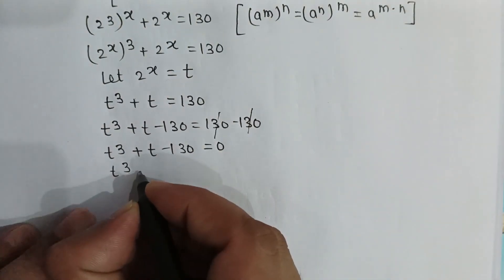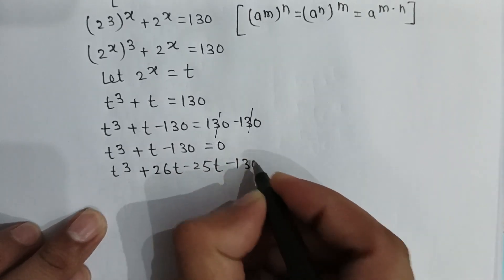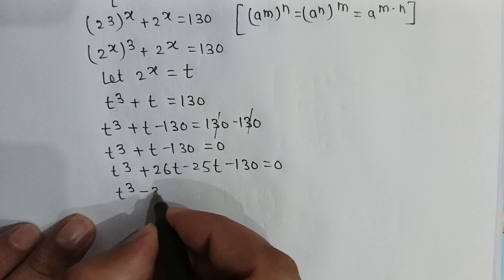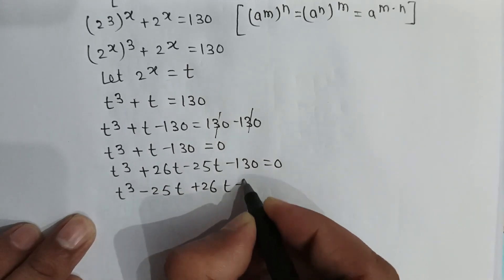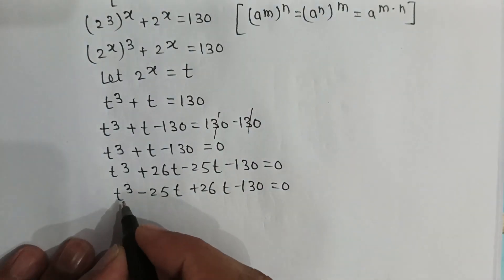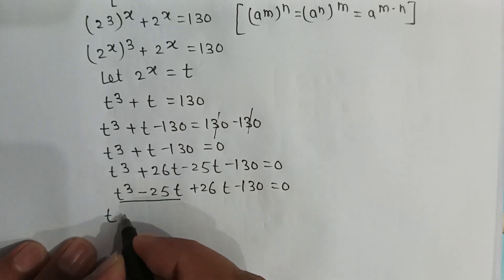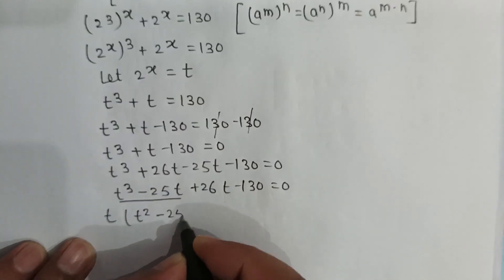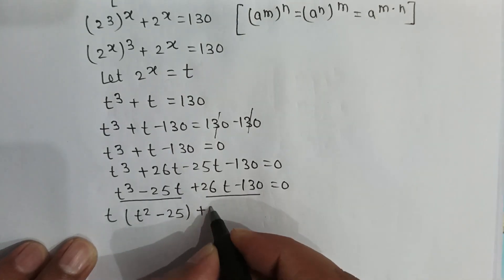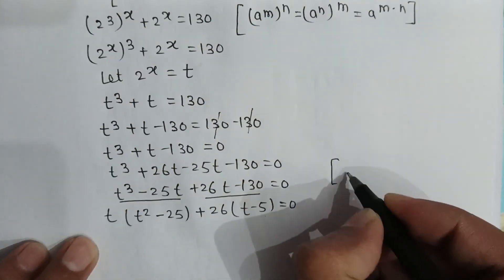We can rewrite this as t to the power 3 minus 25t plus 26t minus 130 is equal to 0. Taking t common from the first two terms gives t squared minus 25, and taking 26 common from the last two terms gives 26 times t minus 5.